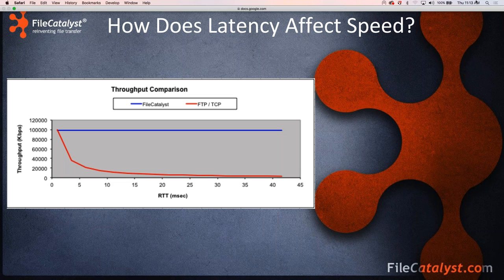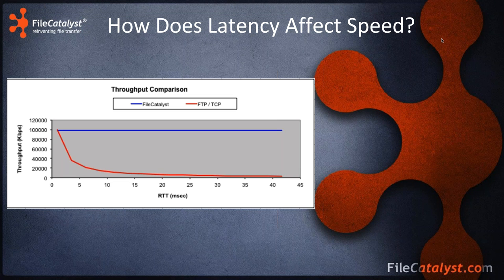So how does latency affect speed? Looking at this graph comparing File Catalyst and FTP on a 100 megabits per second link, as you increase latency the red line — FTP — drops down significantly, whereas File Catalyst maintains 100 megabits per second regardless of latency.